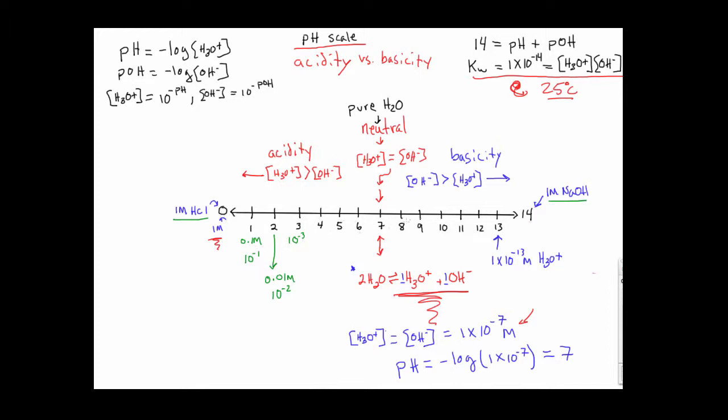As we decrease going in the direction from 0 towards 7 in H3O plus, we're actually increasing as we move along the scale from left to right in the concentration of hydroxide. So to put some perspective on this, at pH 0, we have 10 to the minus 14th molar in hydroxide. And when we go from 0 to 1, where the H3O plus is actually 0.1 molar, the concentration of hydroxide here is 10 to the minus 13th molar.